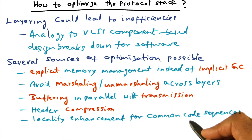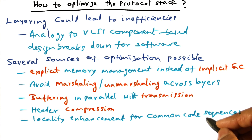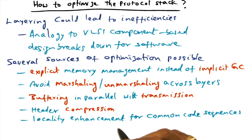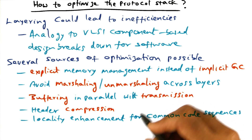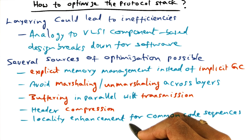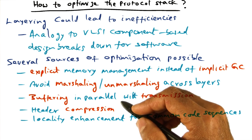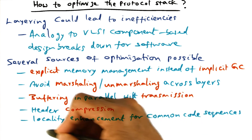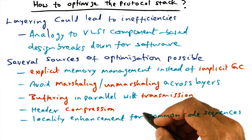Another thing we always have to worry about is making sure that the code we execute fits in the caches. This has been something we've talked about all along, from single-node systems to parallel systems — locality enhancement, making sure the working set of code executing on a processor fits in the cache, is very important. This is an opportunity by identifying common code paths across the different layers of the protocol stack and co-locating that common code path to enhance locality. That is another source of optimization.